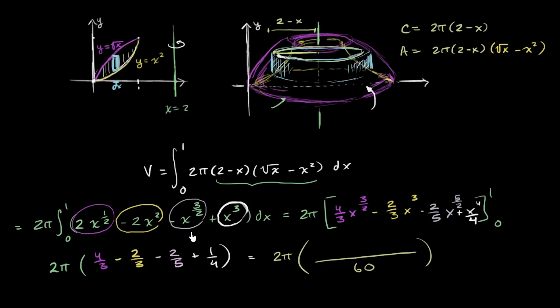4/3 is the same thing as 80/60. Negative 2/3 is the same thing as negative 40/60. Negative 2/5 is the same thing as negative 24/60. And then 1/4 is the same thing as 15/60.